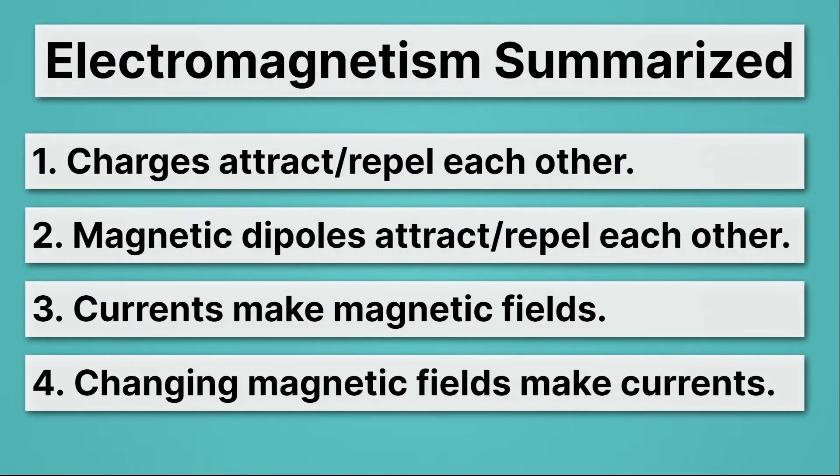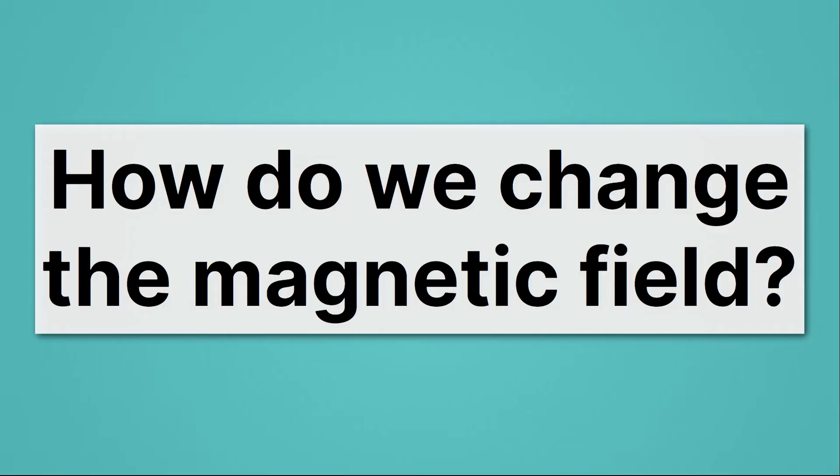The fourth principle says that changing magnetic fields make currents. So you can see that principles three and four are kind of the opposite of each other. In principle three, currents make magnetic fields, and in principle four, magnetic fields make currents. Now, the key is for number four is that those magnetic fields have to be changing. How do we change the magnetic field? Well, there's two basic ways to do that.